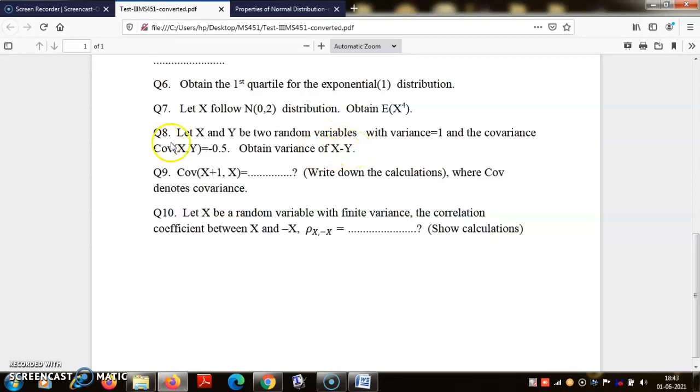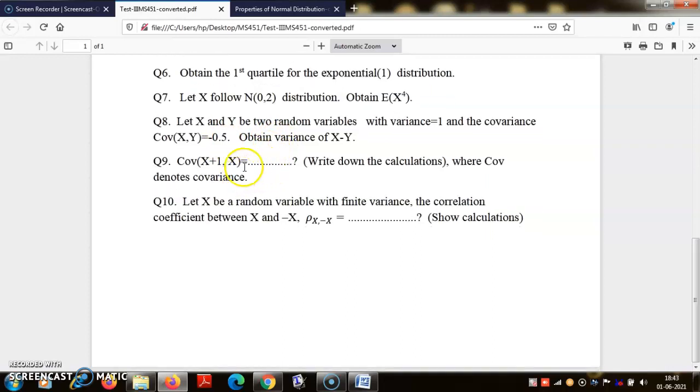The formula is variance of X plus variance of Y minus twice covariance of XY. But covariance XY is minus 0.5, so it becomes plus 0.5. So naturally there I had to deduct one mark.